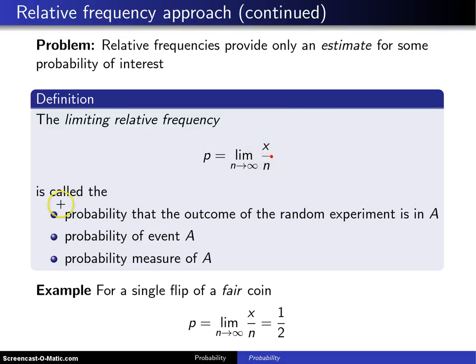And that is called the probability that the outcome of the random experiment is in A. It's called the probability of event A. That's how we'll refer to it most often in this class. In some classes, it will also be known as the probability measure of A.